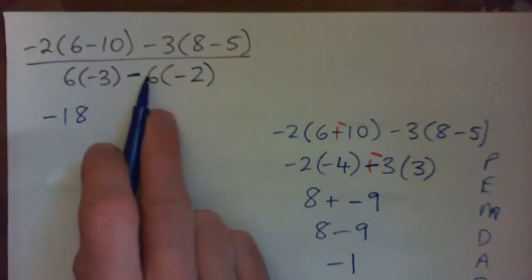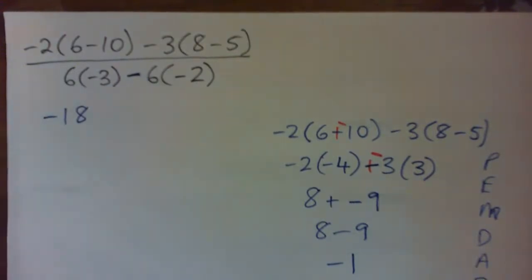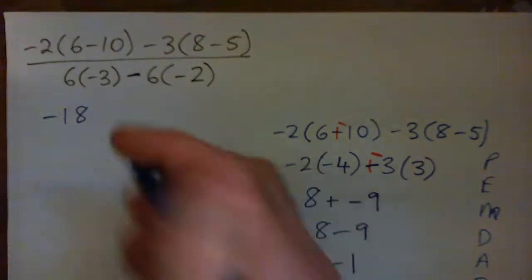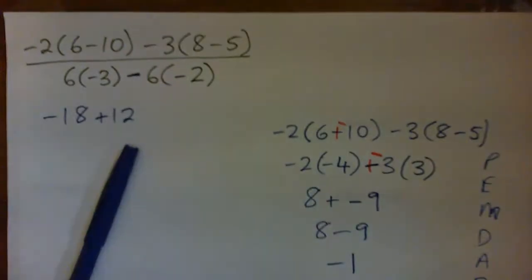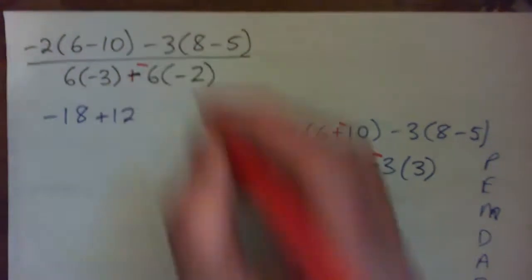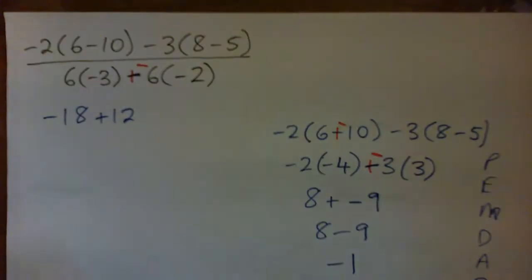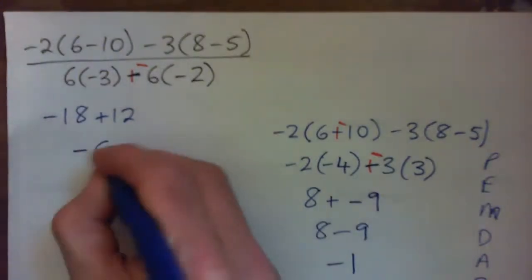Then we've got negative 6 times negative 2, which is simply what? Negative 6 times negative 2 is just plus 12, right? Or if you really want to, you can think of this as plus negative 6 times negative 2, which is like plus positive 12. Plus 12, same thing, right? So we have negative 18 plus 12. 18 bad guys, 12 good guys. What does that make?